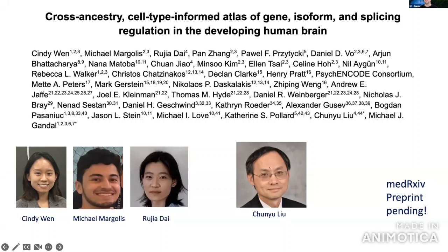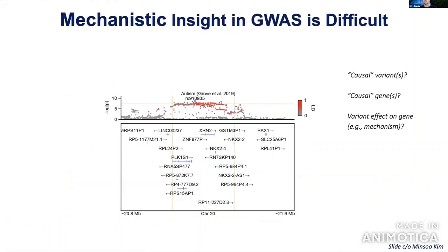This work was spearheaded with my collaborator Chen Yu Liu and driven by three talented graduate students: Cindy Wen, Michael Margolis, and Rujia Dai. Gaining insights from GWAS into biological mechanisms is challenging — every day a new large-scale GWAS identifies more loci associated with neuropsychiatric disorders, but the critical bottleneck is taking those identified loci and gaining insight into the specific biology.